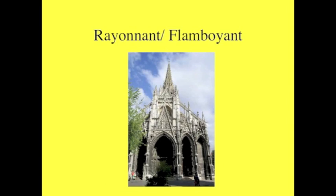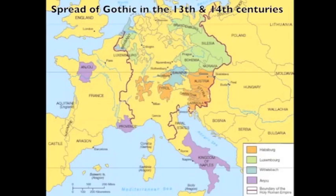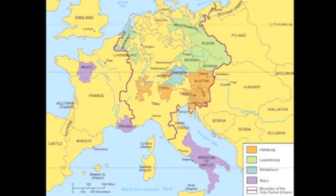This is an image of Saint-Maclou in Rouen. It is a really good description of how ornament becomes autonomous — how ornament begins to replicate itself in a way that's more sculptural than didactic. The map here shows you the spread of Gothic in the 13th and 14th centuries, moving into this late period of Gothic. What we see as we move into this late period is an increased interest in lightness and dematerialization and ever-increasing fragility.